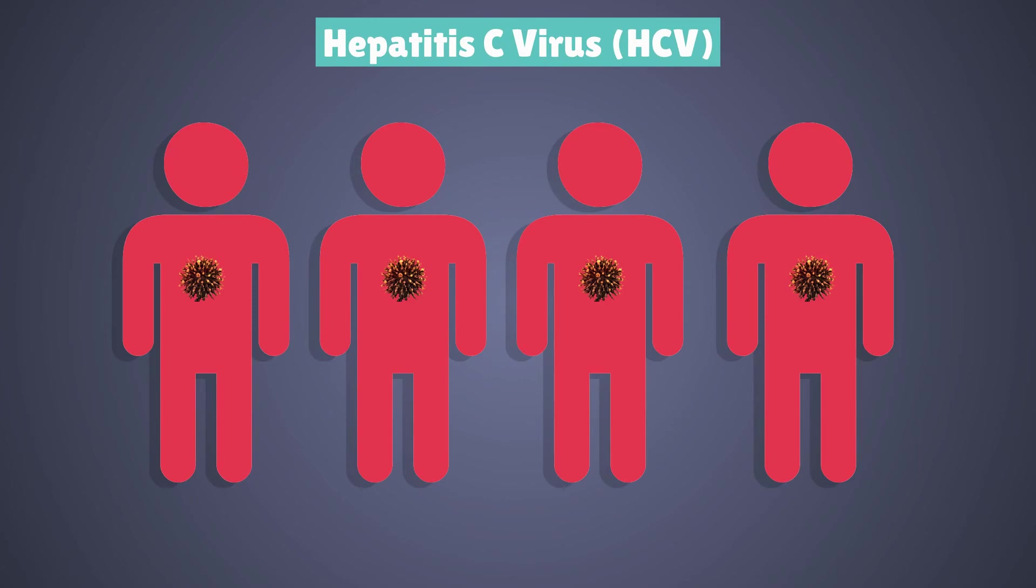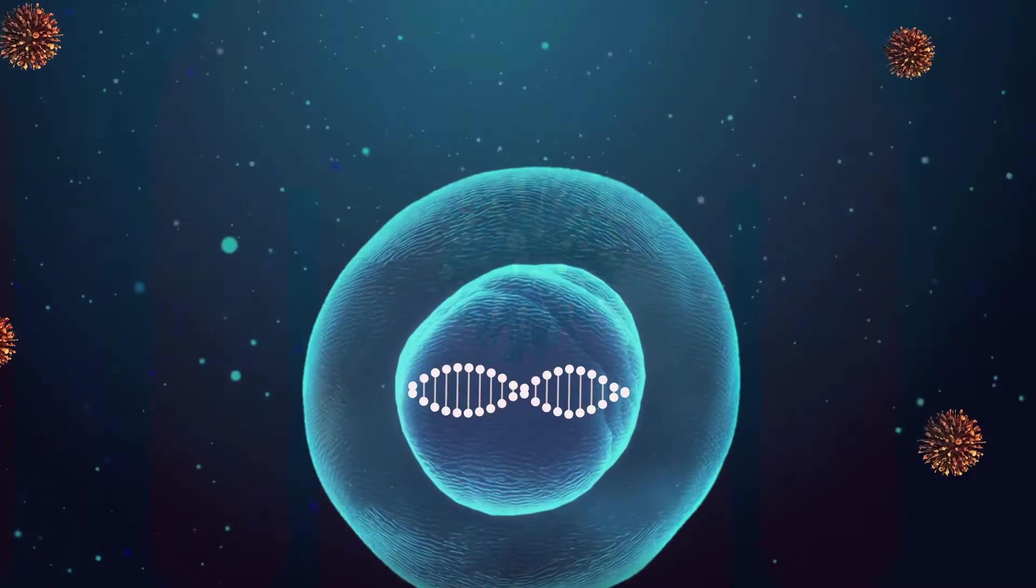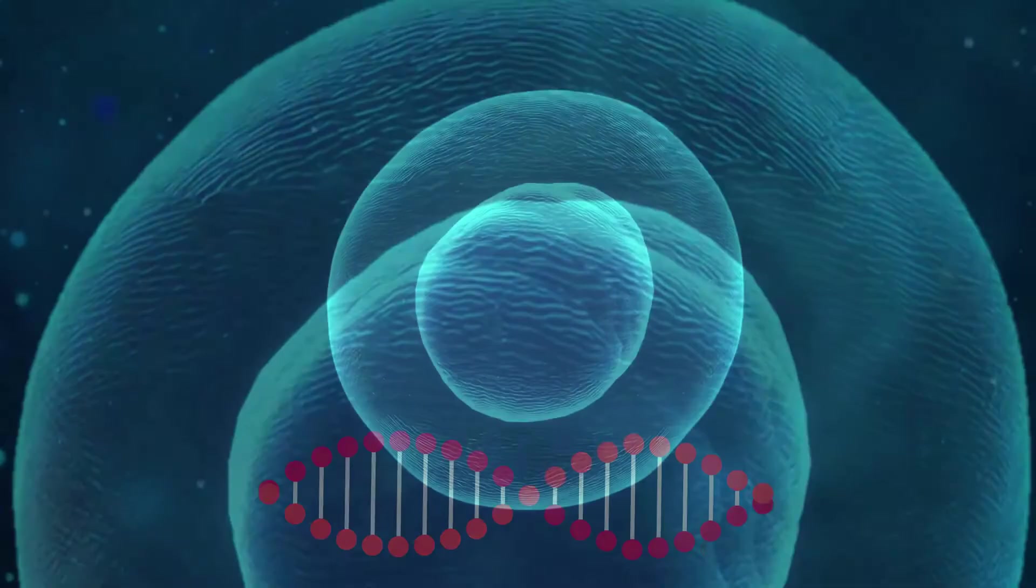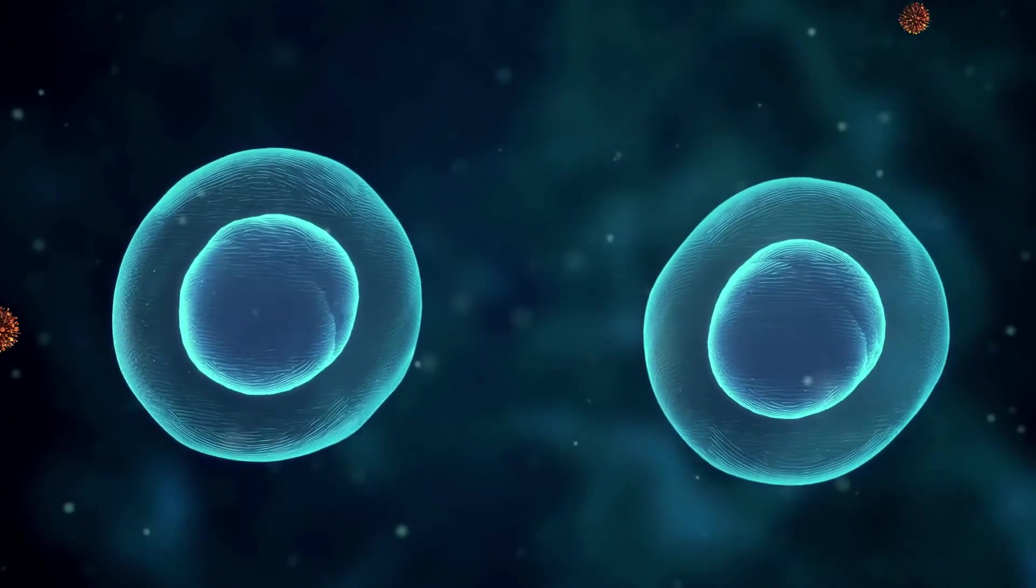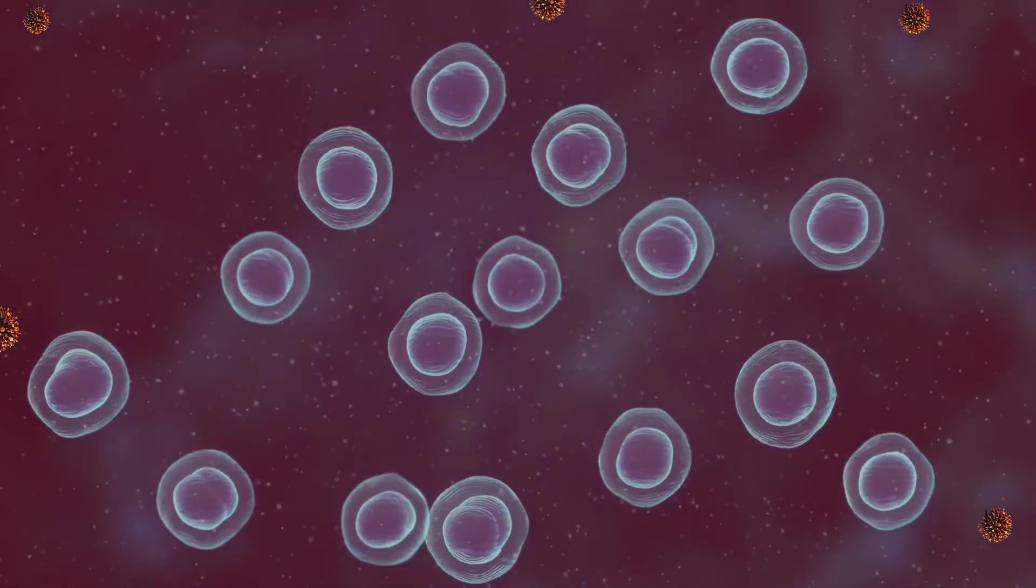In over 3 out of 4 cases of HCV, the infection cannot be cleared and the person has it for the rest of their life. The viruses can cause cancer by damaging the DNA, thus causing uncontrolled cell growth. The virus can also cause inflammation of the liver, which impacts on normal cell function.